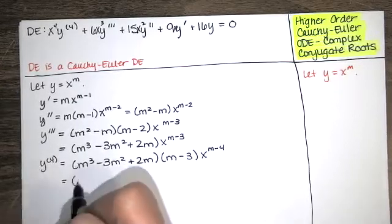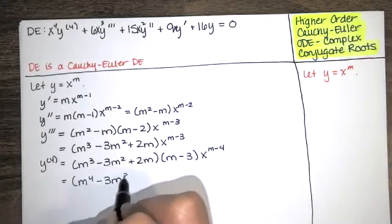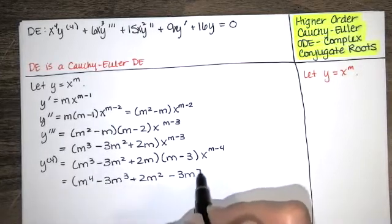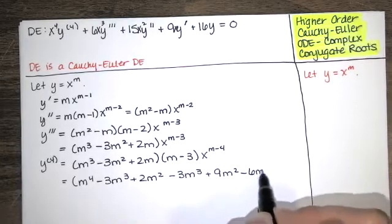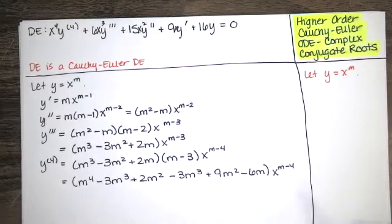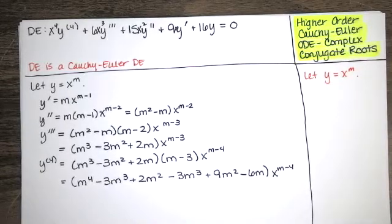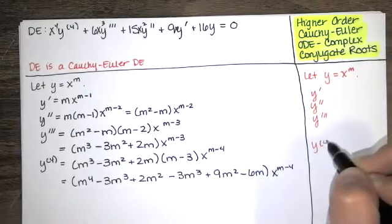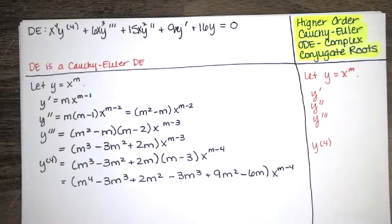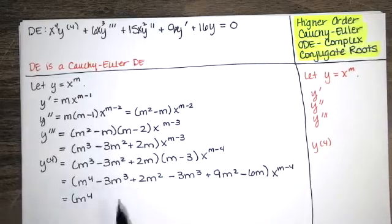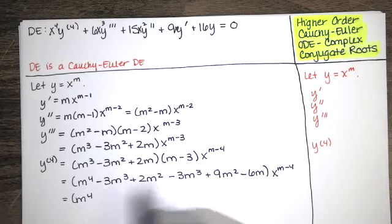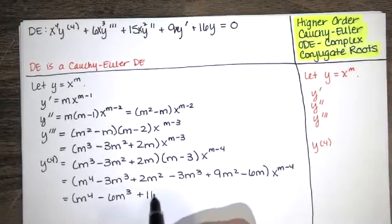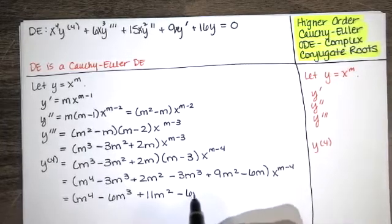If we distribute the m through here, we'll get m to the fourth minus 3m cubed plus 2m squared. If we distribute the negative 3 through here, we'll get negative 3m cubed plus 9m squared minus 6m, times x to the m minus 4. Collecting like terms: negative 3m cubed minus 3m cubed minus 3m cubed is minus 6m cubed, 2m squared plus 9m squared is 11m squared, and then the negative 6m term.